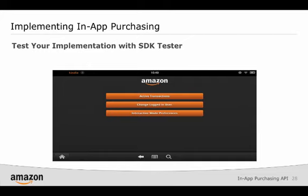In addition to providing responses to IAP API requests, SDK Tester will show interstitial or purchase flow dialogues just like a live app does. This will allow you to evaluate the user experience of the purchase options in your app and save you from having to build your own purchase flow dialogues. SDK Tester will show two interstitial dialogues for each purchase request: one is a confirmation dialogue that shows the purchase price, and the other is a confirmation dialogue that must be manually closed using the X button in the upper right-hand corner. Open your app and click purchase and you should see the purchase flow in action.